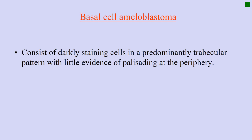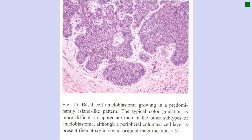The fifth histological type of ameloblastoma is basal cell ameloblastoma. It consists of darkly stained cells in a predominantly trabecular pattern with little evidence of palisading at the periphery. The word 'basal cell' means a cell with larger nuclei where the entire cell looks more basophilic. If you look at the histopathology slide, it is predominantly dark blue in color.